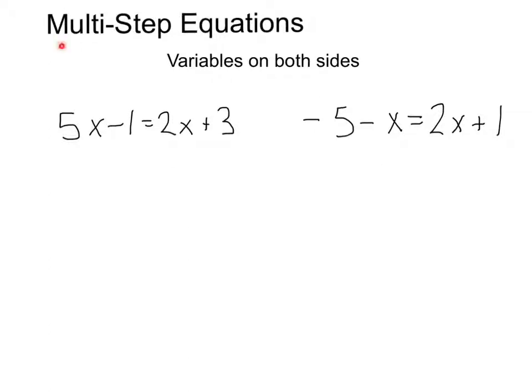We're going to be looking at multi-step equations, two different types of scenarios, the first of which has variables on both sides. Look at this first example. Here we have 5x minus 1 equals 2x plus 3. Notice this time we have an x, a variable, on each side of the equal sign.